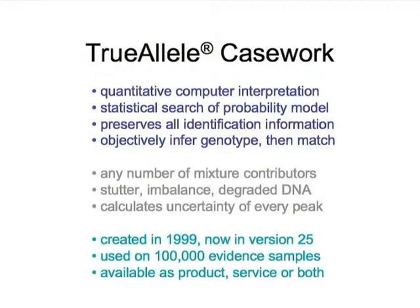TrueAllele is a system that implements this approach — there are others in the world that do this. It's quantitative computer interpretation doing a statistical search across all parameters in the probability model: all possible genotypes of all contributors, mixture weights, degraded DNA, stutter, and so on. The goal is to preserve all the identification information present in the data. It objectively infers the genotype, never seeing a suspect. After inferring the genotypes, the genotype probability distribution is put into a formula and a likelihood ratio is computed. It can handle any number of mixture contributors. If a computer does not compute the uncertainty of every peak, just use thresholds, because your results will be unreliable and destroyed in court.